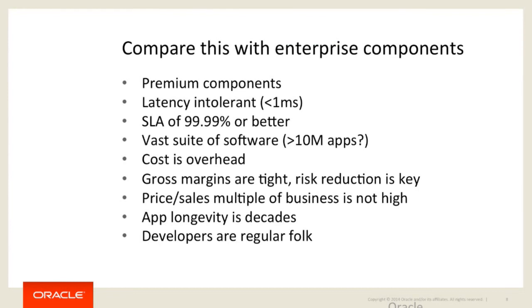Your gross margins are generally tighter because you're not operating in the tech space — you are using tech to operate in retail or manufacturing or whatever. Your price-to-sales multiples, your ability to capitalize, is much more narrow. The longevity of your applications is insane — it's like decades. Some of these things have been running for upwards of half a century. And your developers are regular people. You can't be hiring out of the top 5%; you need to be hiring out of the normal middle 60% — perfectly fine programmers, but they're not the elite of the elite.